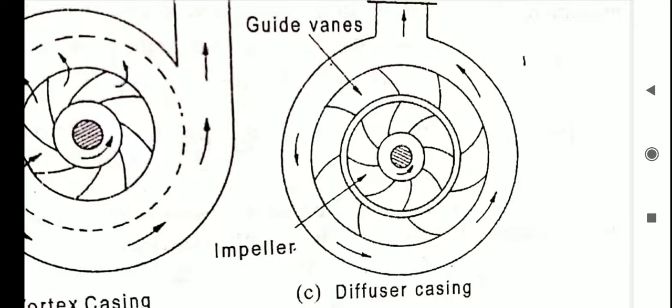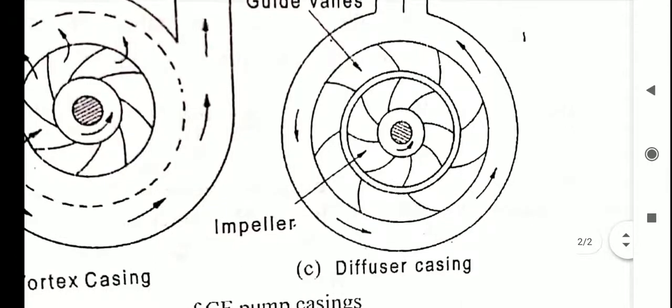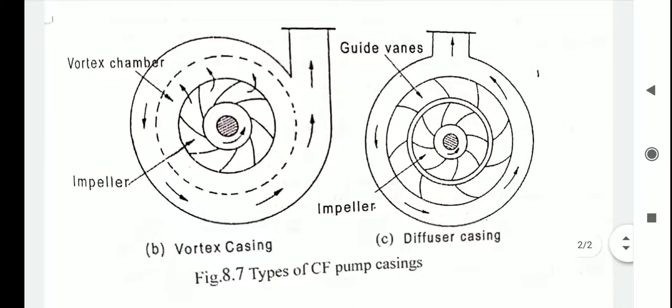Hence, the efficiency of the pump in this type of casing is more than those two types. This covers volute casing, vortex casing, and diffuser casing. In the next video, we will discuss cavitation and precautions for preventing cavitation. Thank you.